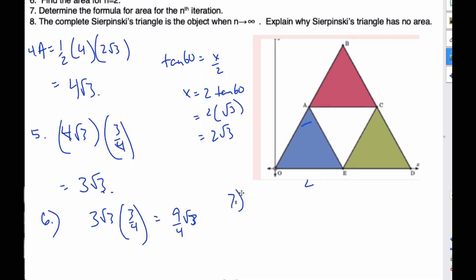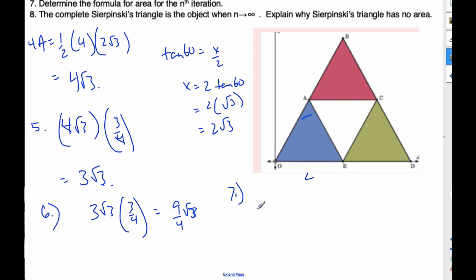Number 7 says find the form of the area of the nth iteration. Well, if 4√3 is the original one, here is the first iteration. I multiply it by three-quarters again for the next iteration, so each iteration will be to the power of n.